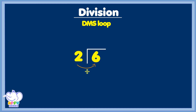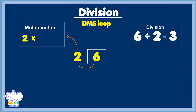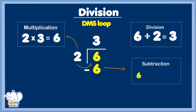DMS loop helps out a lot. Divide the number that you've got. Multiply and fill the right spot. Subtract the number right on dot.